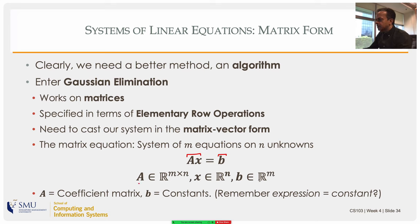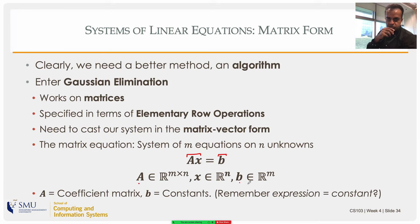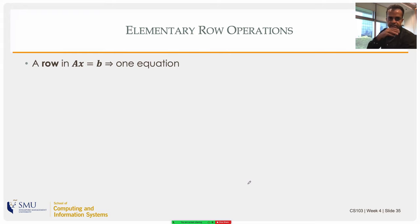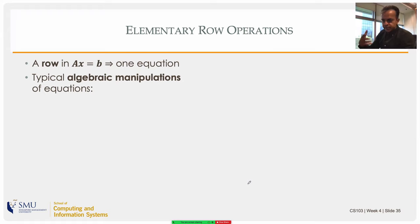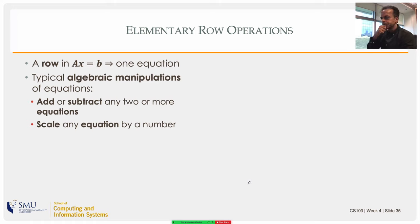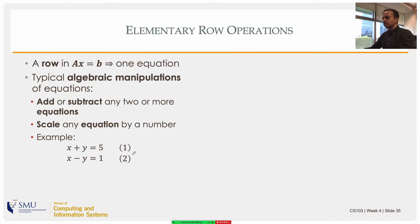The matrix A comes from the coefficients of the equations — each equation is of the form some number times x plus some number times y, and those coefficients fill A. Vector b is the right-hand side constants. Since A and b are just numbers, you can feed them into a computer and do manipulations to determine solvability and solve the equations.